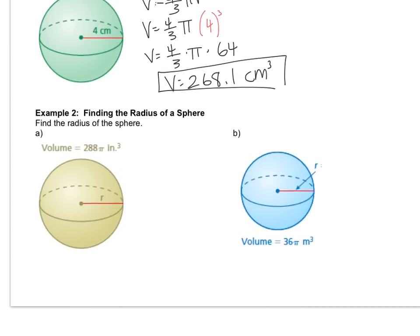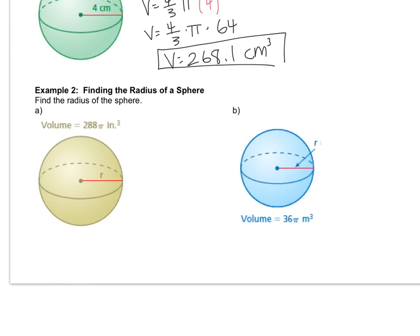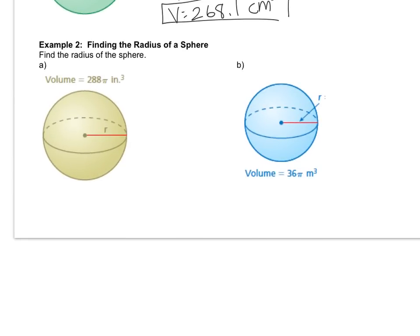Alright, the next example is a little more complicated. It's one of the ones where you might have to find a piece of the sphere rather than the volume. What you'll notice is that the volume is not 288, the volume is 288 pi. So same thing, don't freak out because it looks a little different. The steps are still the same.